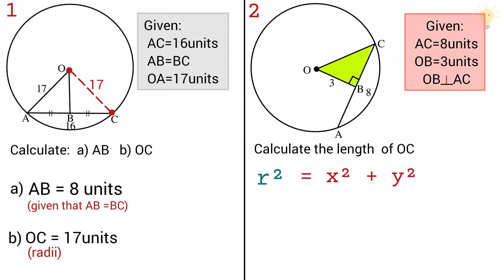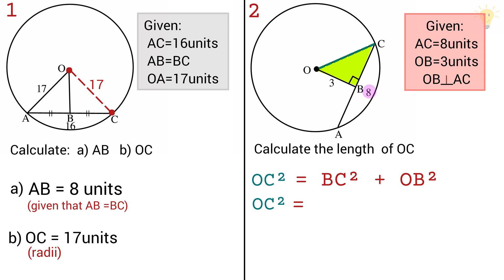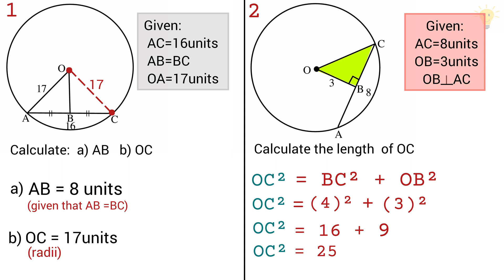Because this is a right-angle triangle, we can use the Pythagorean theorem: R squared equals x squared plus y squared. The hypotenuse R is opposite the 90 degree angle, so R is OC. Since OB meets AC at the midpoint and AC is 8 units, BC is 4 units. OB is 3 units. So 4 squared plus 3 squared is 16 plus 9 equals 25, and the square root of 25 is 5. Therefore OC is 5 units.